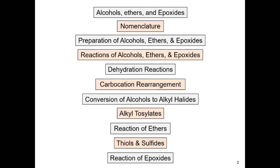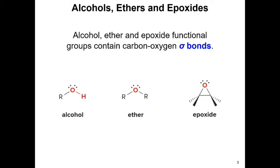Let's take a look at the chemical structure of alcohols, ethers, and epoxides, and how we can differentiate these three organic compounds. The main similarity between them is the presence of carbon-to-oxygen sigma bonds. We have an alcohol, ether, and epoxide, all containing an oxygen atom with single bonds — they only contain sigma bonds.